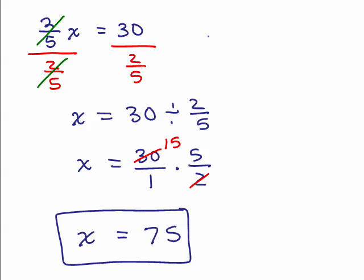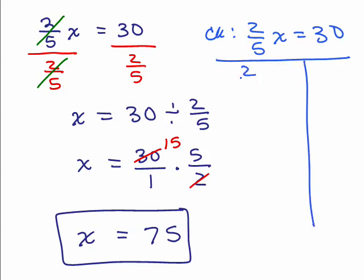Let's go ahead and check it. 2 fifths equals 30, you write the problem down, plug in 75 for X, and then go ahead and cancel if you can, or you can multiply and say that's 150 over 5. I'll do that this time just to show you that's okay if you prefer, and that reduces to 30. Okay, so 75 is the answer.